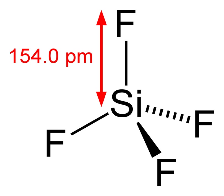Volcanic plumes contain significant amounts of silicon tetrafluoride, with production reaching several tons per day. The silicon tetrafluoride is partly hydrolyzed and forms hexafluorosilicic acid.